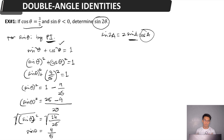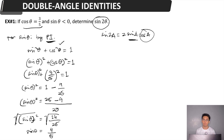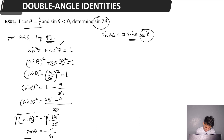However, we have a condition: sine theta is less than 0. This means we use the negative root — there are two roots of the square root of 16 over 25, one positive and one negative. Since sine theta is less than 0, we use the negative value. So sine theta equals negative 4 over 5. Now we proceed to solve for sine 2 theta.